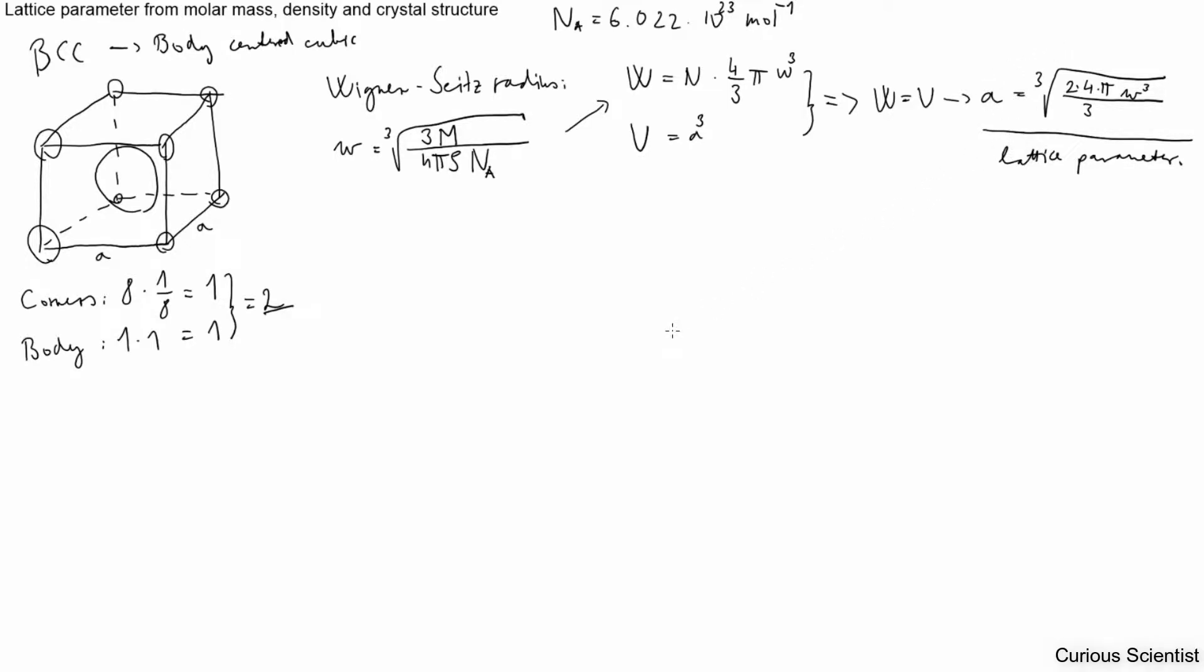We had the number of atoms from here, that was 2. And then we just continue 4π divided by 3, and then of course we still have the Wigner-Seitz radius. So this will be the lattice parameter. And then now we have the lattice parameter, we will need to do some geometry. It will be very simple, but I will show you why it is very important.